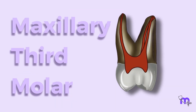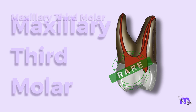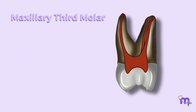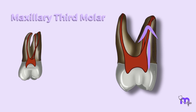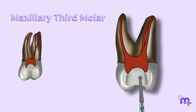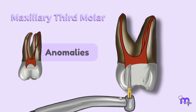The maxillary third molar is seldom indicated for endodontic treatment. The anatomy is similar to the second molar, with three canal orifices and three well-developed roots close to each other. The roots can be straight, curved, dilacerated, or fully or partially developed. The access opening is like the previously discussed molars, and so are the anomalies.